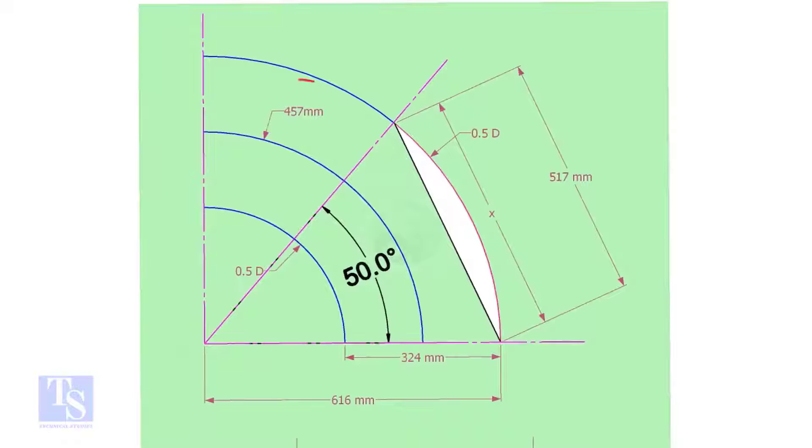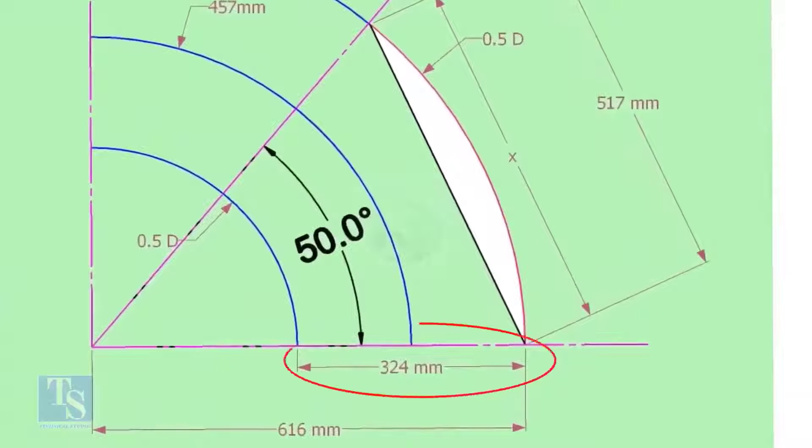Center of a 12-inch long radius elbow is 457 millimeters. Draw an arc of length with this dimension. Draw another two arcs on both sides of this arc, adding and subtracting half OD of the elbow.